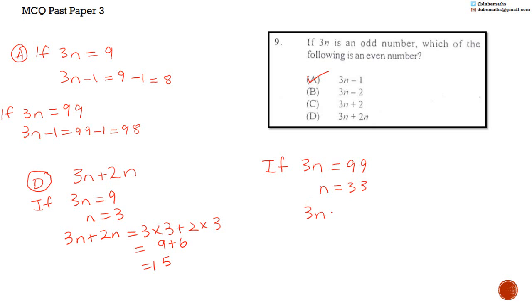Then, 3N plus 2N becomes 3 multiplied by 33 plus 2 multiplied by 33, which gives 165, which is odd. Both 15 and 165 are odd, so D is wrong. Thus confirming that A is the answer.